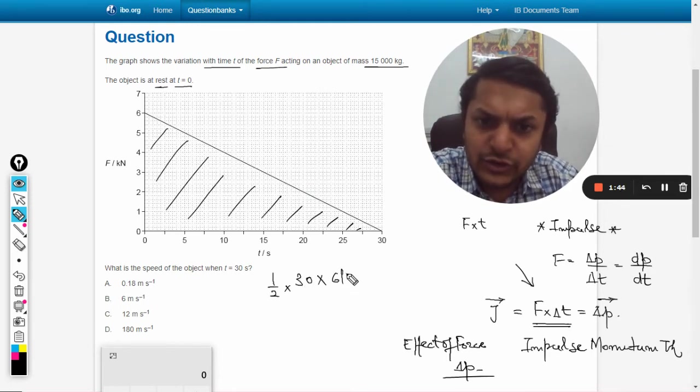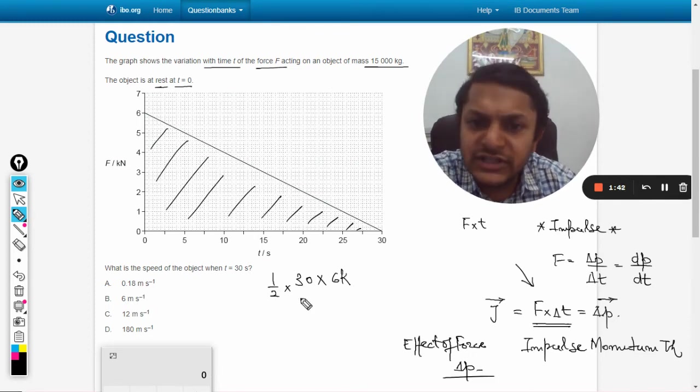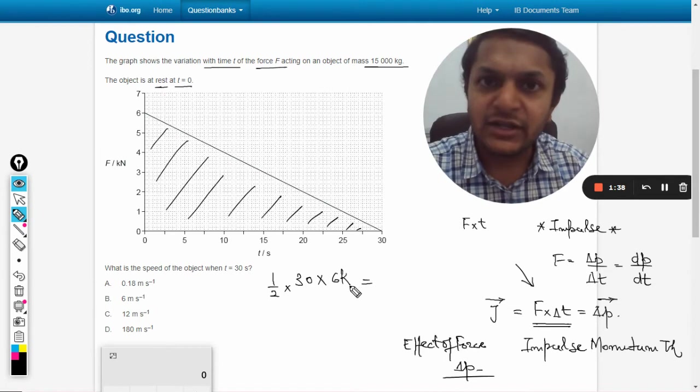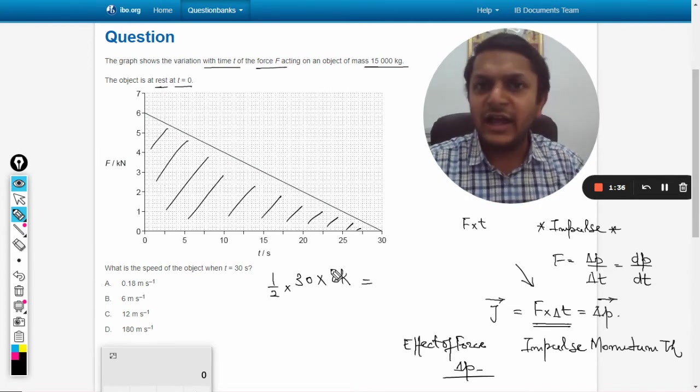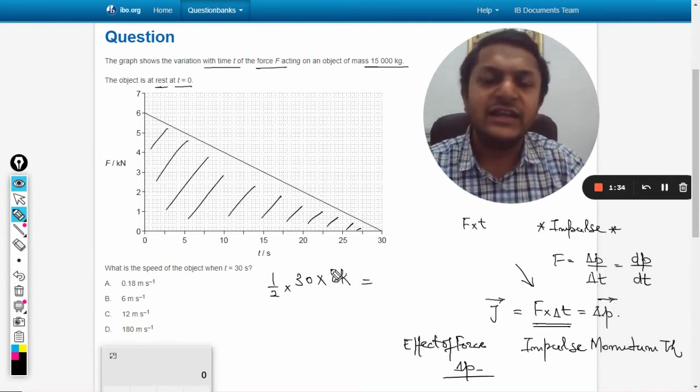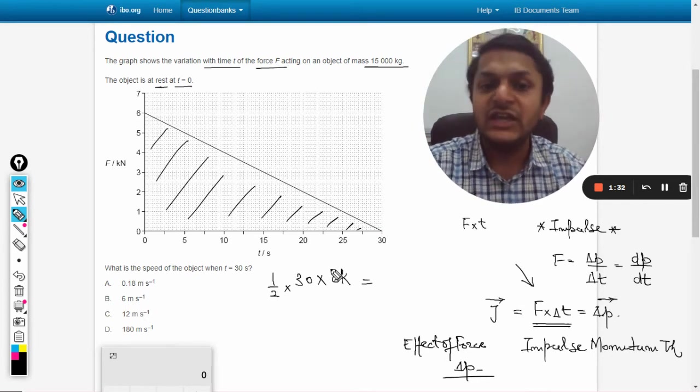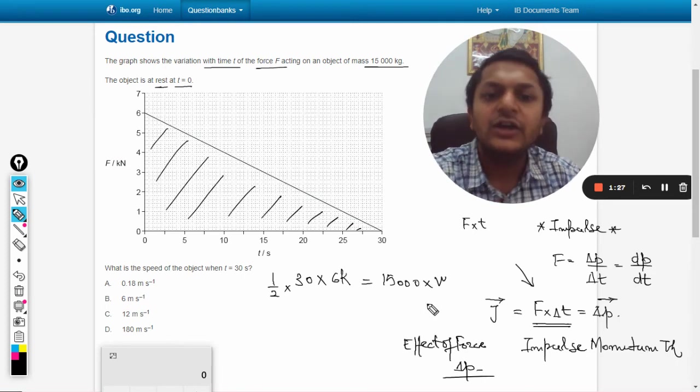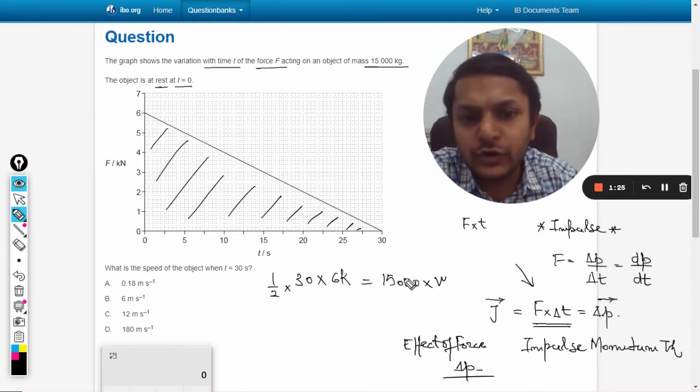This area will be equated with the change in momentum. Initially the body is at rest, so finally it has a momentum that is m into v. Final momentum is 15,000 into v, so v is what we want to find.